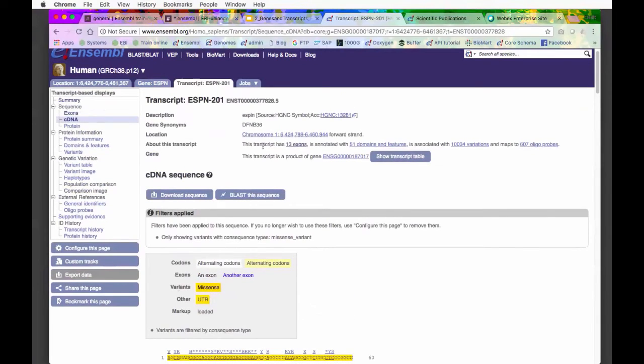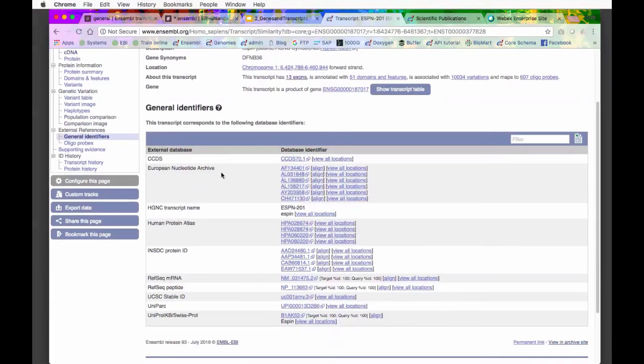Just like with the gene, you can see the transcript in other databases. If I go to general identifiers here on the left, I get a link out to other databases which have data on this transcript. We have things like CCDS, the ENA, human protein atlas. Now because we've got a transcript with its own protein, we have links out to protein data as well, things like UniProt. If there is a structure available, we also have a link out to the PDB. We don't for this particular gene, but I can just link straight out to other databases very easily.